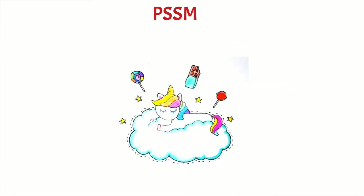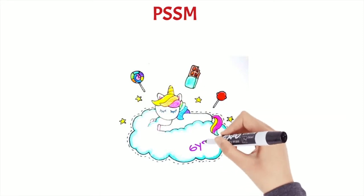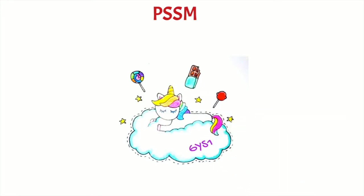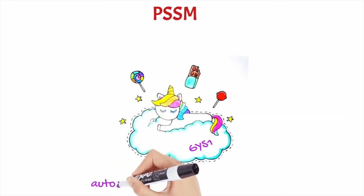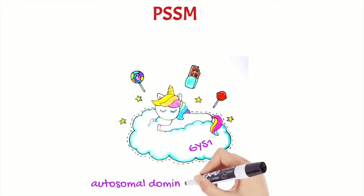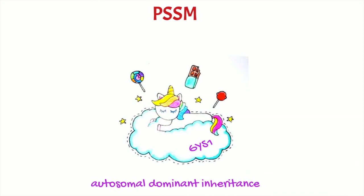This excess of polysaccharides is due to a mutation of the glycogen synthase gene. It is a disease that is transmitted by autosomal dominant inheritance, whose homozygotes are more severely affected.